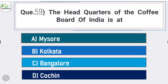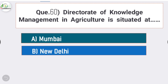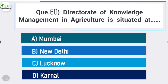Question number fifty-nine: the headquarters of Coffee Board of India is located at - answer is option C - Bangalore. Question number sixty: the Directorate of Knowledge Management in Agriculture is situated at - answer is option B - New Delhi.